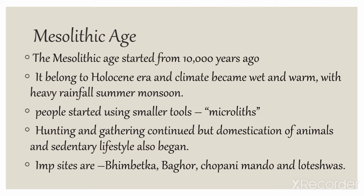In the Mesolithic period people still survived through hunting and gathering. However, there are some new features in the Mesolithic age. One important new feature is the domestication of animals — this is the time when animals began to be domesticated. Along with this, people started adopting a somewhat sedentary lifestyle to some extent. Sedentary lifestyle means staying in one place, as opposed to constantly moving around while hunting and gathering.